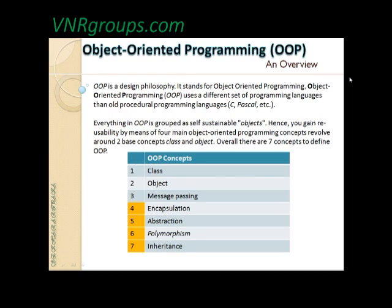We have already seen what is a class and object in previous sessions, and we'll see them again today. The seven aspects are: class, object, message passing (in other words, simply message), encapsulation, abstraction, polymorphism, and inheritance. These are the seven characteristics that a language should possess to be qualified as an object-oriented programming language. We'll see each of them in detail.